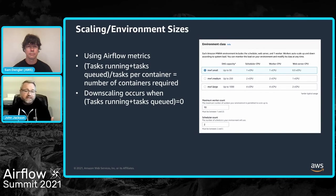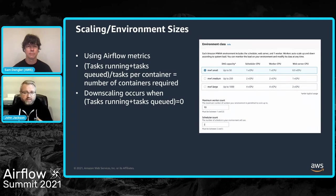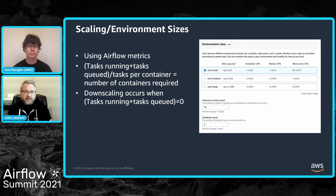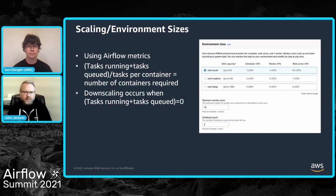For scaling down, to ensure we don't interrupt running tasks, we wait until tasks running plus tasks queued equals zero. If nothing is running and nothing is queued, it's safe to dispose of extra workers and return to the minimum worker count — which is one by default, but can be higher if you're expecting a more sustained workload.